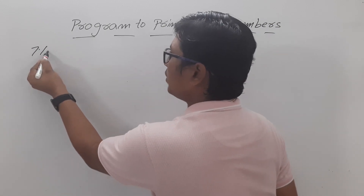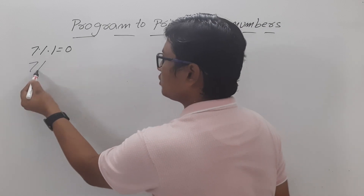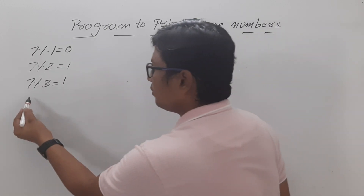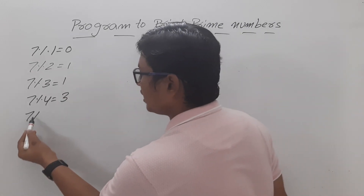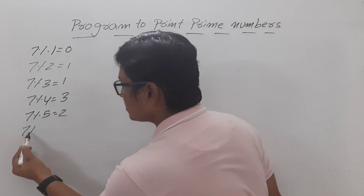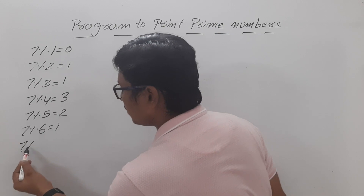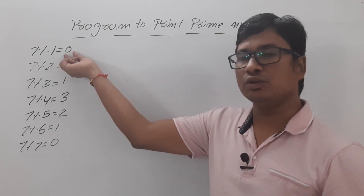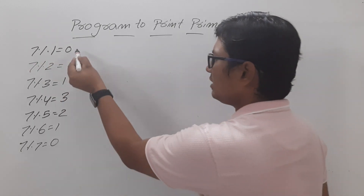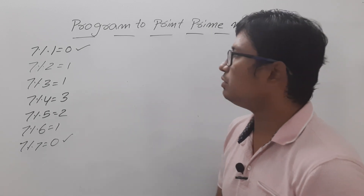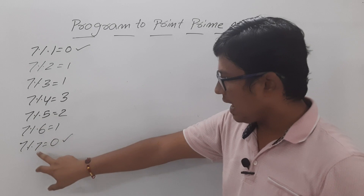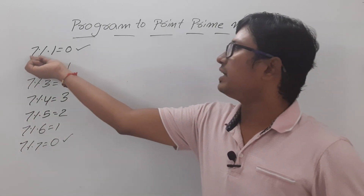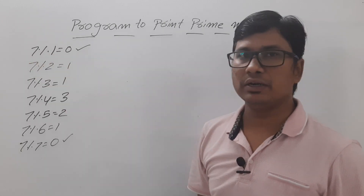Let me discuss with a simple example. Let's take the value 7. If I divide by 1 I get remainder 0, divide by 2 remainder 1, divide by 3 remainder 1, divide by 4 remainder 3, divide by 5 remainder 2, divide by 6 remainder 1, divide by 7 remainder 0. The remainder is 0 in only two cases, so 7 is successfully divisible by 1 and itself. It is not divisible by other numbers, so 7 is a prime number.